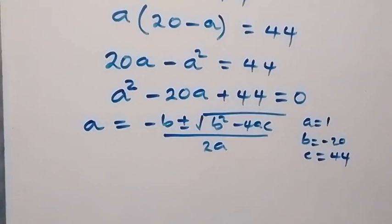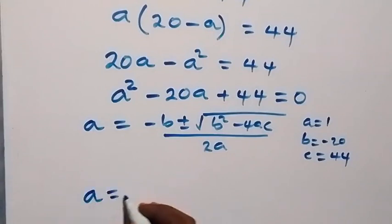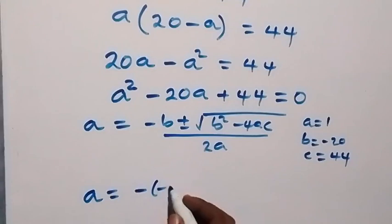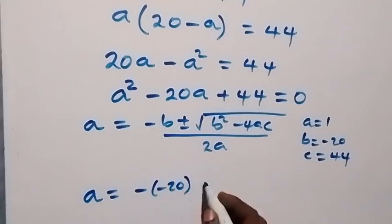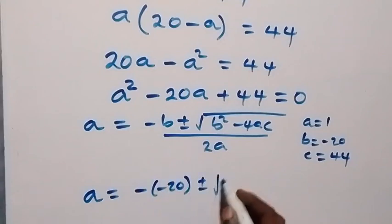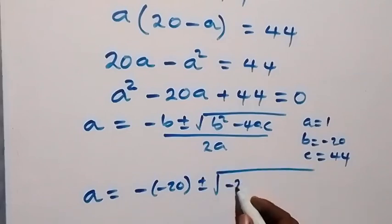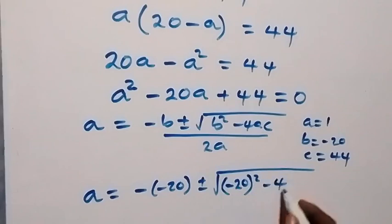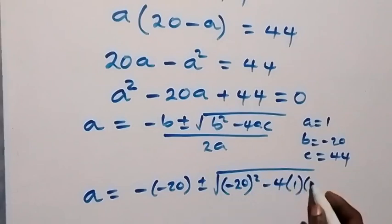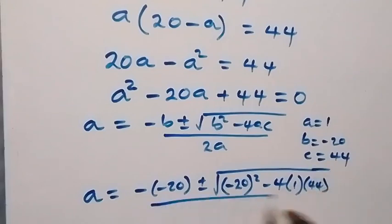Then when we substitute here, we have A now equals to minus minus 20, plus or minus square root of minus 20 squared, then minus 4 times 1 times 44, then all divided by 2 times 1.